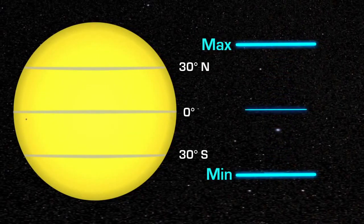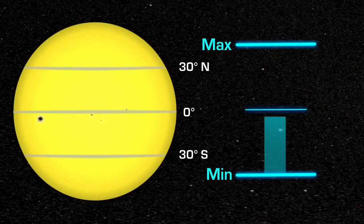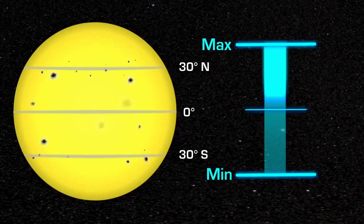At solar minimum, there are sometimes no sunspots to observe. At solar maximum, there can be many at the same time.